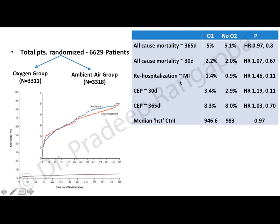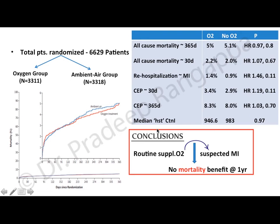Moving to the neurology section: a JAMA 2017 study looked at routine oxygenation in stroke patients. The question was whether giving routine oxygenation reduces the penumbra — an area of salvageable brain tissue — and leads to improved functional outcome. This was a multicentric randomized controlled trial done in 136 hospitals in the UK, with a primary outcome of modified Rankin Score at 90 days, ranging from zero (no symptoms) to six (death).